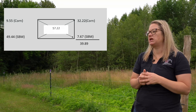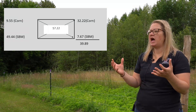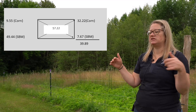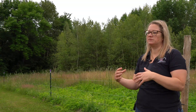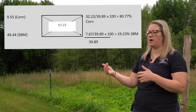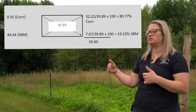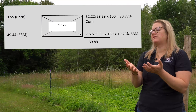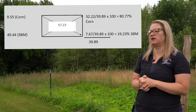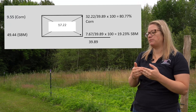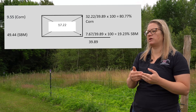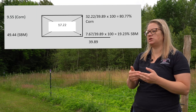Adding both parts together gives total parts of 39.89. Now we have all the numbers to make our fractions. Taking the parts of corn divided by 39.89, multiplied by 100, gives 80.77 percent corn in the diet. Taking the parts of soybean meal divided by 39.89, multiplied by 100, gives 19.23 percent soybean meal in the diet — to meet the animal's nutrient requirement of 17.22 percent crude protein.